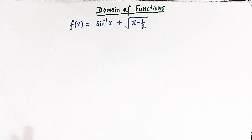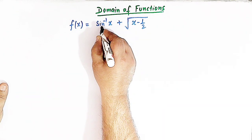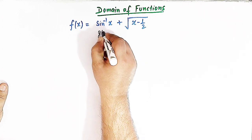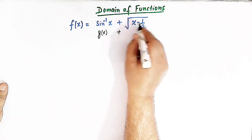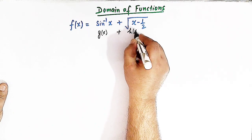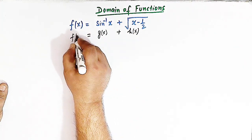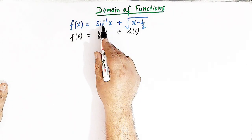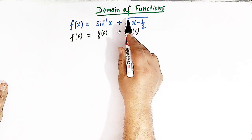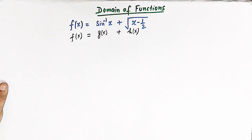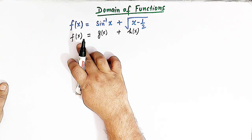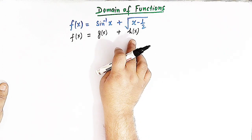We have to find all the values of x for which this function f of x is defined. So let us take this function as g of x and this function as h of x. So f of x is the sum of g of x, which is sin inverse x, and h of x, which is square root of x minus 1 over 2. Whenever we have a function described as a sum of two functions,